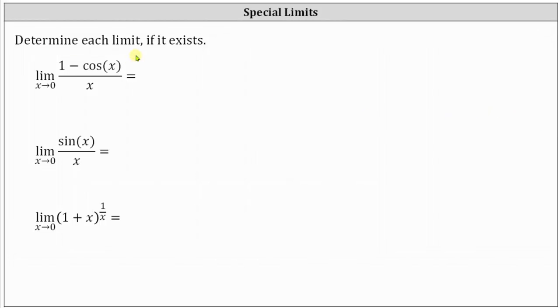We want to determine each limit if it exists. These three limits are often called special limits. We'll determine these limits using Desmos.com and analyze a table of values as well as a graph.